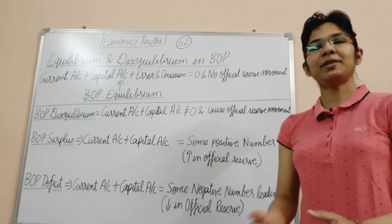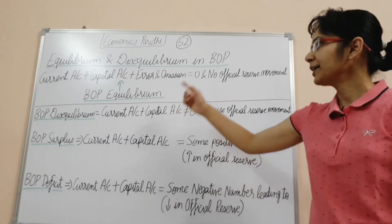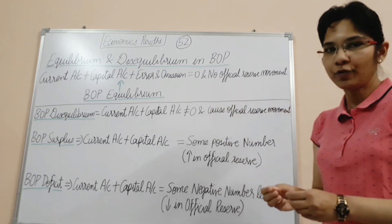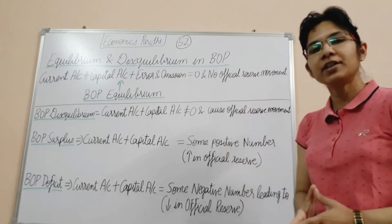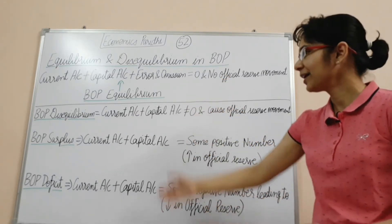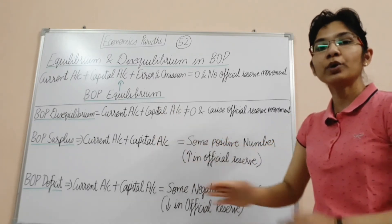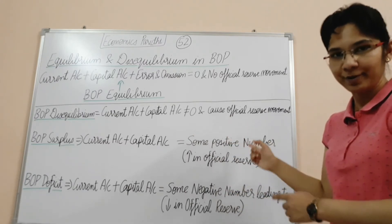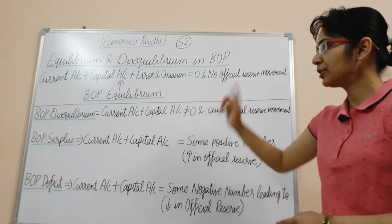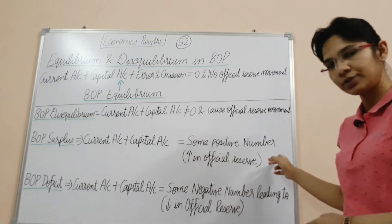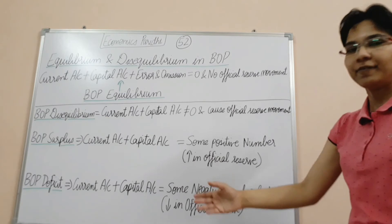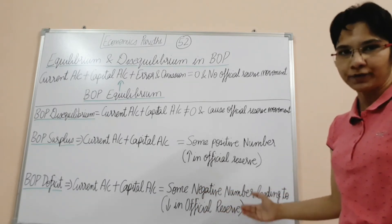If the official reserve account is not shown in the capital account but is placed separately, then the balance of payment can show a surplus or deficit. When the current account balance plus capital account balance plus errors and omissions equals zero, there is no official reserve movement by the Reserve Bank of India, meaning balance of payment is in equilibrium. When the current account and capital account balances result in a negative number, it is a deficit, and there will be a decrease in official reserves.